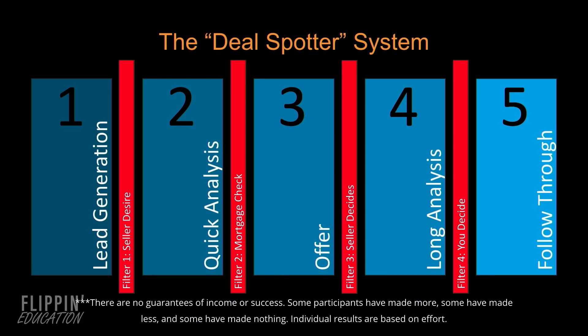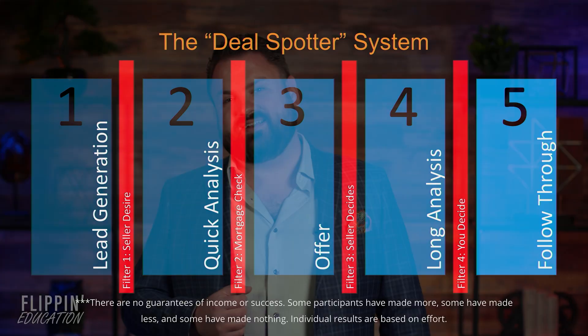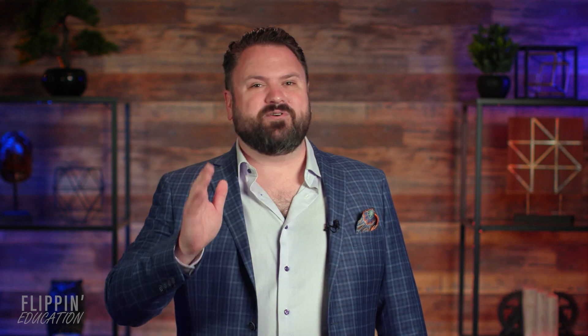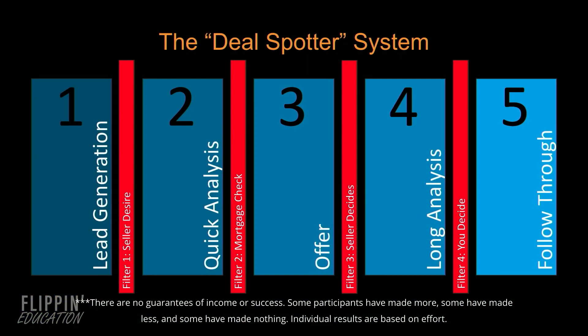We're also going to dive deeply into the DealSpotter system. This is a system I have designed to help you streamline your process of generating property leads, analyzing them, making offers on them, and ultimately acquiring cash-flowing rental properties. This is a five-step system with four filters. It starts with lead generation — I'm going to teach you where to go look for these properties. The first filter is seller desire: you reach out to the owners and see if they're interested in selling. The second step is quick analysis, where we run the numbers to make sure it's going to work. Real estate investing is all about the numbers. The second filter is mortgage check — we find out if the homeowners can even sell us their property for the number that we need to buy it for.